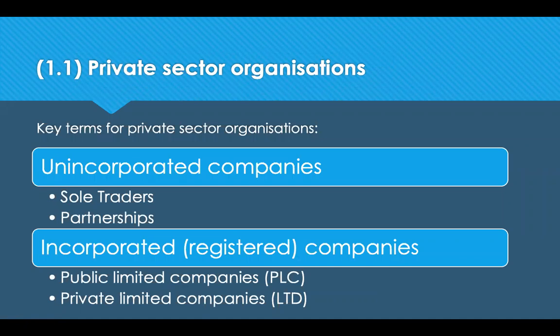The way you approach procurement and supply will depend very much on the context in which it works, so different approaches are needed according to the sector. Let's start with the private sector. The primary objective of a private sector organisation is to make a profit, and they're funded through a combination of investment, revenue and debt.